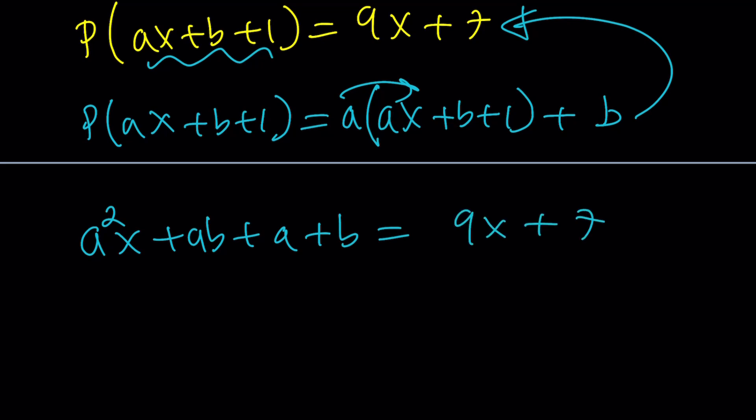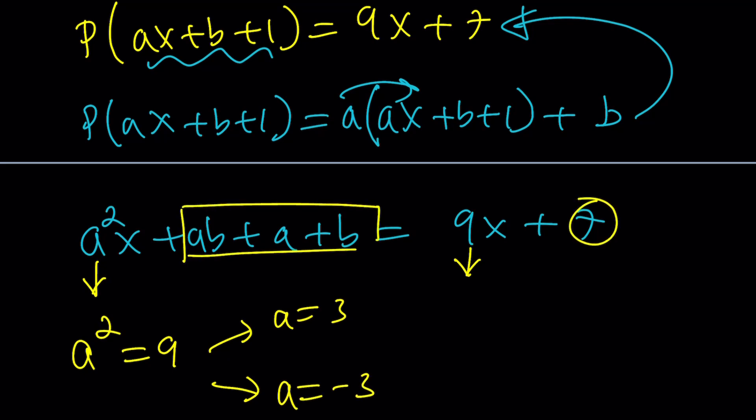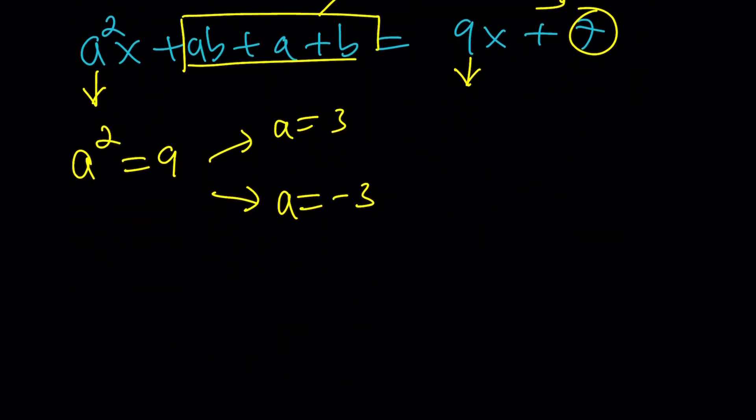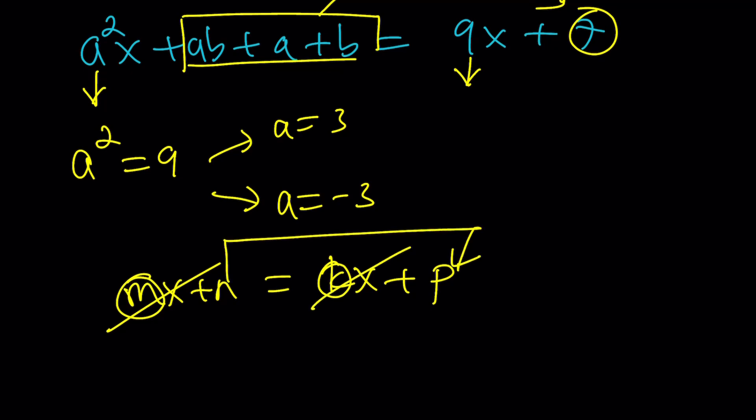These are polynomials that are identical for all values of x in the domain, and the domain is the set of real numbers, of course. So what does that mean? It means that the coefficient of x needs to be the same on both sides. This means a² = 9, which gives us a is 3 or a is -3. The second piece of information comes from the constants. This number needs to equal 7, because constants equal constants.